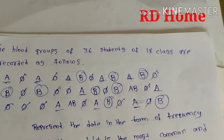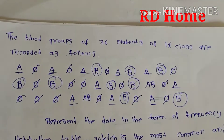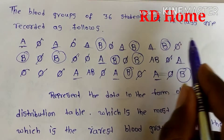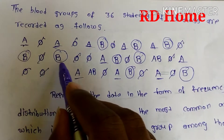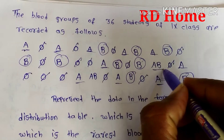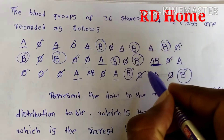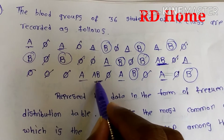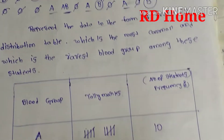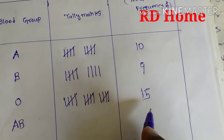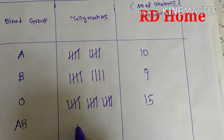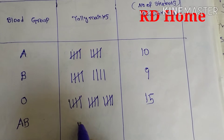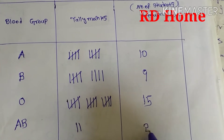In the same way, we have to find AB. Where is AB? Once you look at the first row, then in the second row there is 1, and in the third row 1 more is there — that means 2. For blood group AB, we write only 2 tally marks: 1, 2. The frequency for blood group AB is 2.